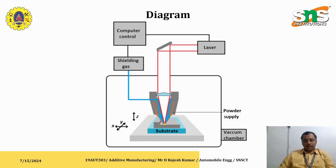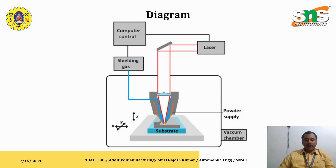This powder form of metal is fused by the application of laser and is deposited over the work plate or build area layer by layer. This entire process is carried out in a vacuum chamber to avoid the oxidization effect.